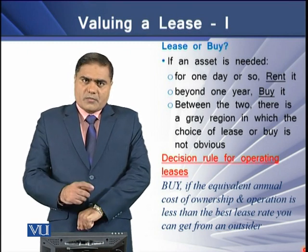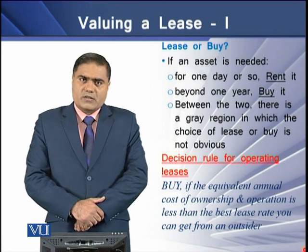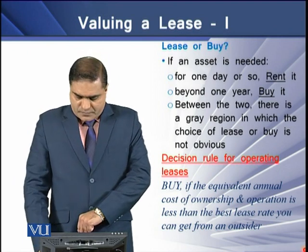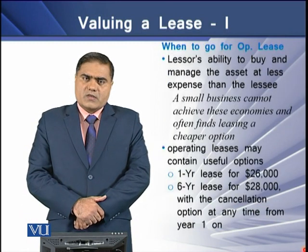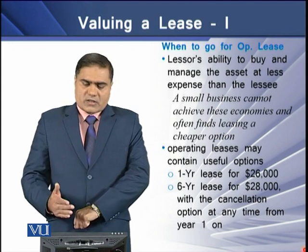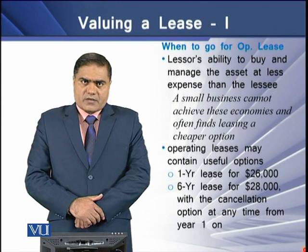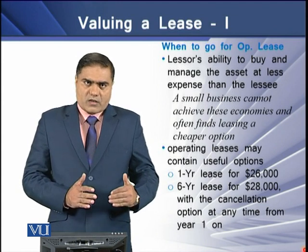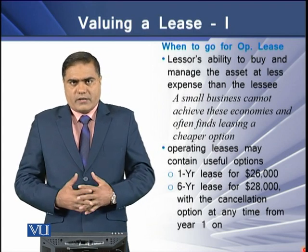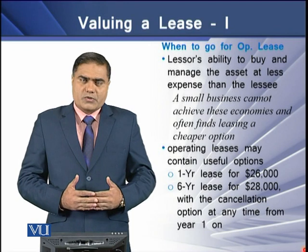If we determine a decision rule for the operating lease, we can say: buy if the equivalent annual cost of ownership and operations is less than the best rate that another lessor can offer to the lessee. The question of when to go for an operating lease depends upon the lessor's ability to buy and manage the asset at a cost less than the lessee. This means that if a lessee can maintain the asset at a cost lesser than the maintenance cost borne by the lessor, then the lessee may go for the operating lease.